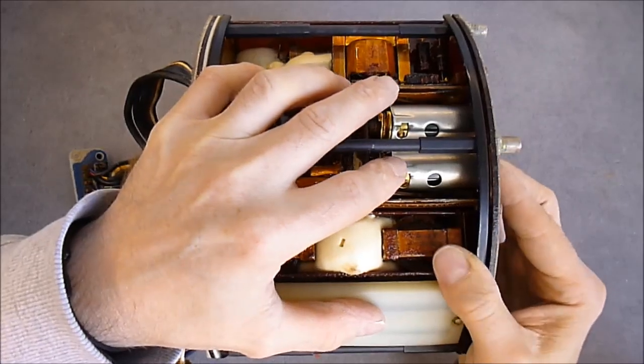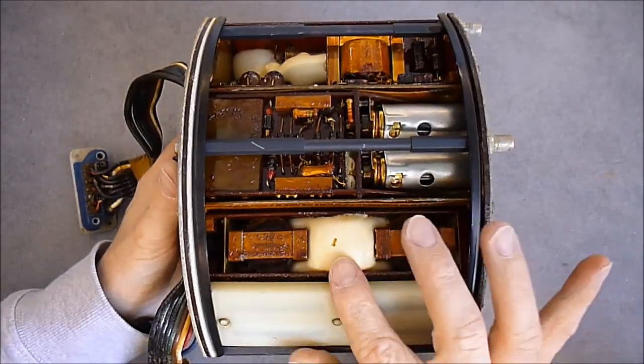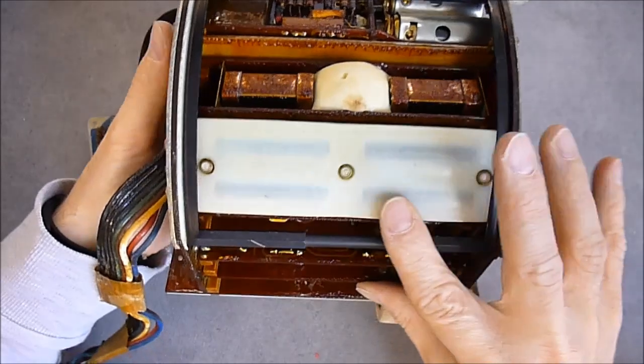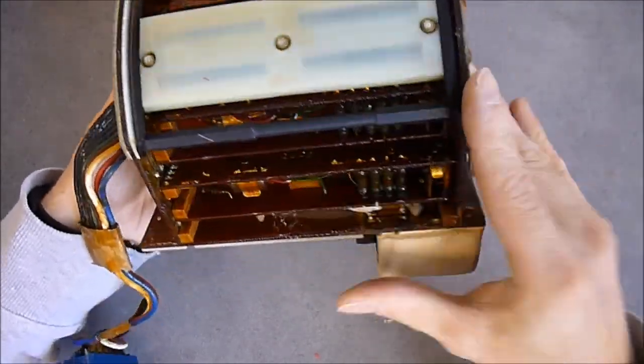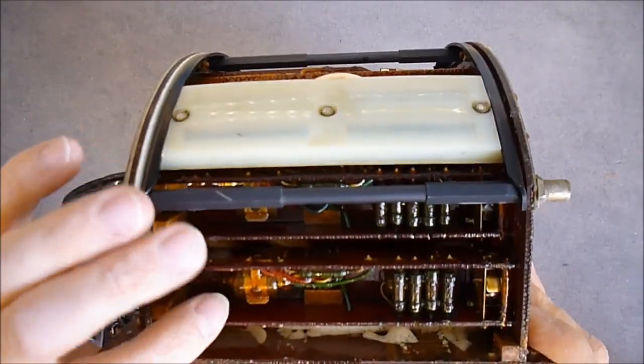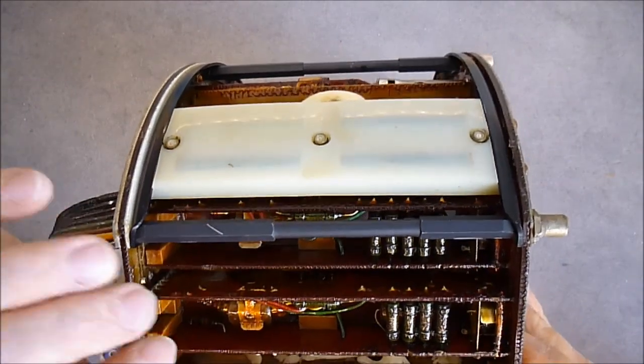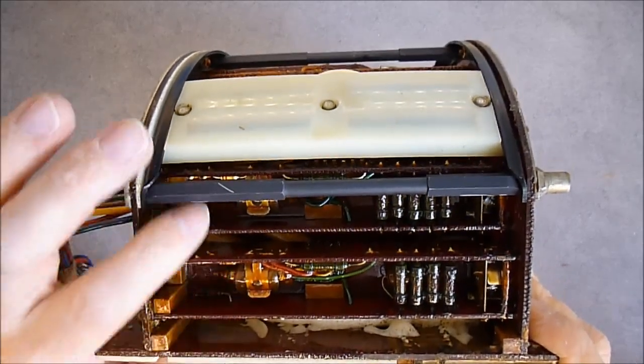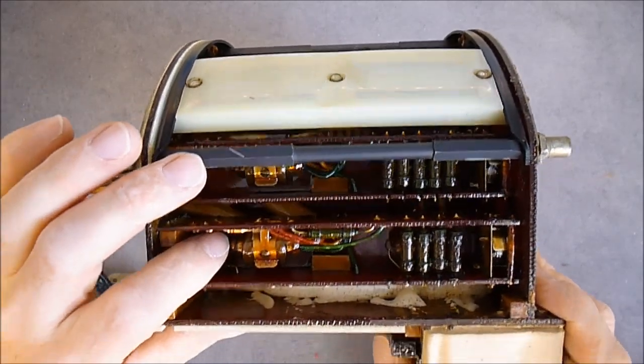I will try to remove this cover and see what the tubes are. Two transformers here, behind here I can guess capacitors. And here we have two similar stages, maybe output stages from the Gyros, with a miniature tube.